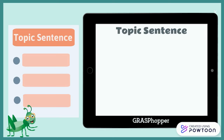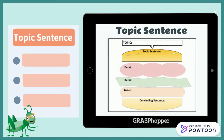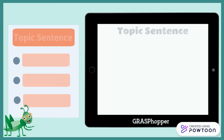It's time to write a paragraph about grasshoppers. First, I take out my organizer. What do I know about grasshoppers? Grasshoppers eat many different types of food. Now you give it a try. On your organizer, write a topic sentence about playgrounds.